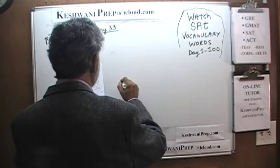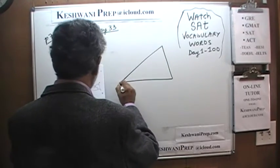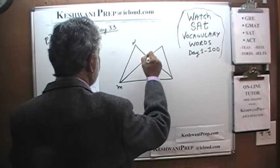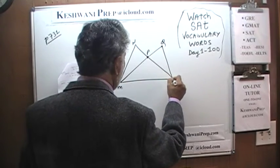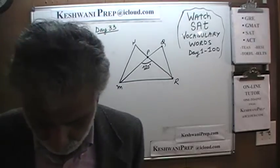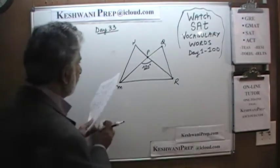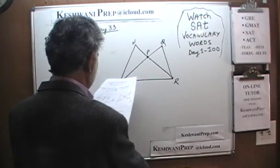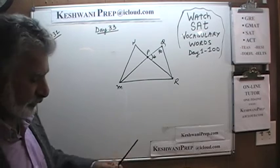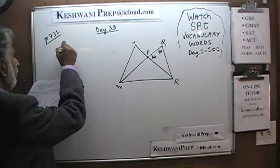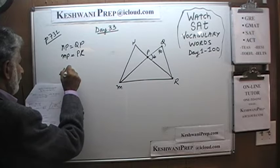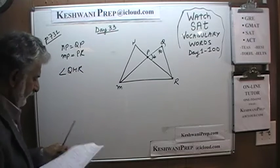We have a figure with points M, N, P, Q, and R. We are told that the angle inside is 60 degrees, and there is 70 degrees. We are further told that NP is equal to QP, and MP is equal to PR. The question simply is, what is angle QMR?